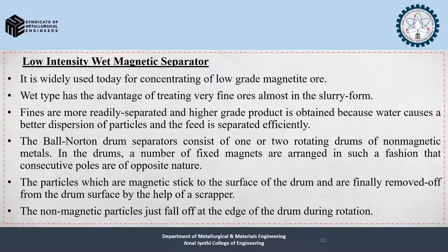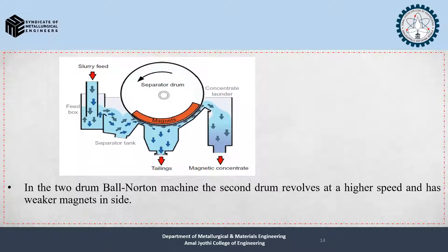The non-magnetic particles fall off at the edge of the drum during rotation. In the single drum Ball-Norton separator, the feed is a slurry feed; non-magnetic particles become the tailings and magnetic particles are collected as concentrate. Now let's look at the 2-drum Ball-Norton machine: the second drum revolves at a higher speed and has weaker magnets inside.